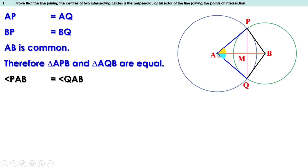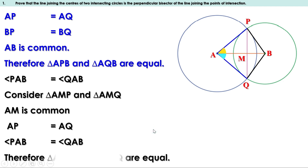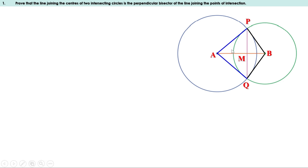Now look at triangles AMP and AMQ. AM is common for both triangles. AP and AQ are equal, and angle PAB equals angle QAB. That means these two sides and the angle between them are equal to the corresponding two sides and angle. Therefore triangles AMP and AMQ are equal. When two triangles are equal their sides and angles are also equal. Therefore MP and MQ are equal. When MP and MQ are equal, M is the midpoint. Therefore AB bisects PQ.